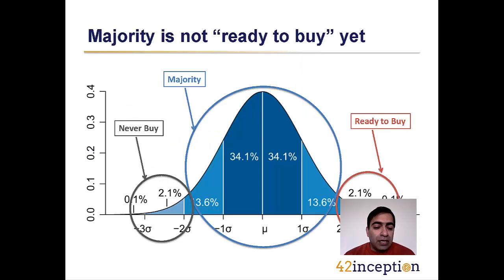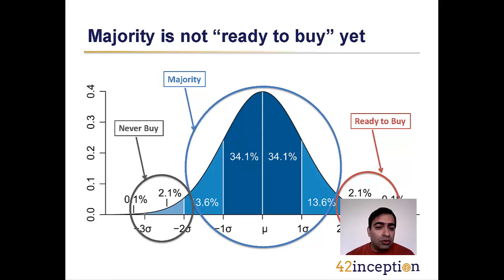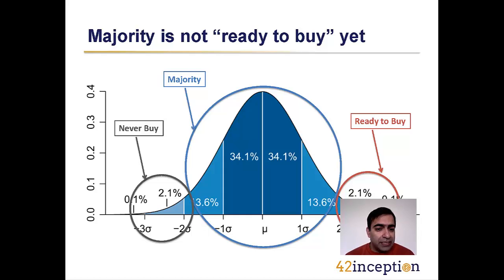In order to set the context right, let me show you a graph. This is a bell graph that represents the distribution of kinds of people who usually visit a website. Do not get stuck on the figures — the idea here is that the majority of people who are visiting your website are not really ready to have a sales conversation or are not really there to buy your products.